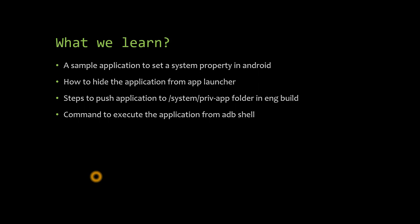In this session, we'll see a sample application to set a system property in Android. We'll also see how to hide the application from the app launcher — my application will not be visible as other Android app icons. Then we'll see the steps to push the application to the system priv-app folder in engineering build, and finally a command to execute the application from ADB shell.